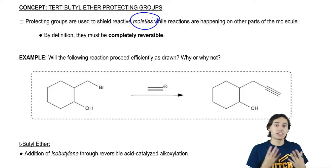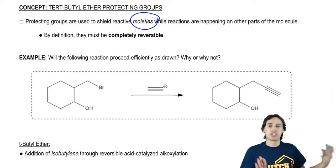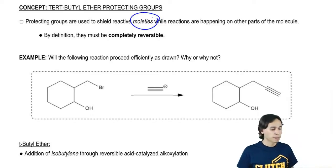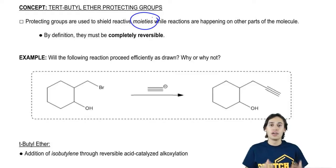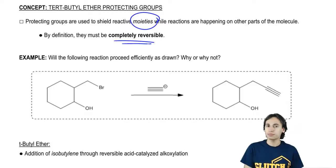I know that sounds complicated, but basically what we're going to try to do is shield vulnerable functional groups from certain types of strong reagents. By definition, this has to be a completely reversible, easily reversible reaction. The reason for that is that you're supposed to be able to take the molecule off after the reaction is complete. So if you're not able to regenerate that vulnerable functional group at the end, that's not really a great protecting group.